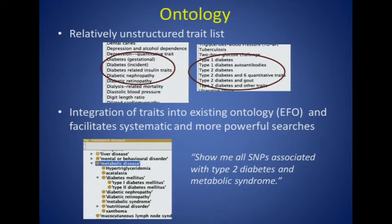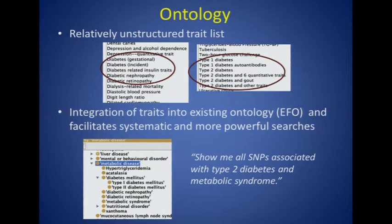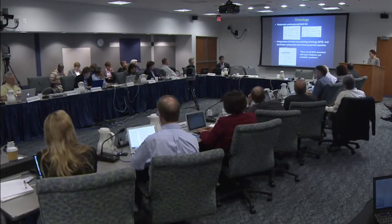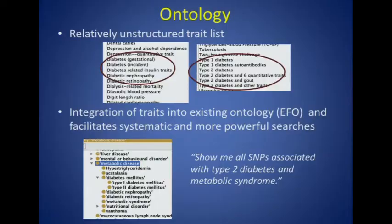Helen Parkinson, who is an expert in developing and adapting ontologies at EBI, noticed that this is a relatively unstructured trait list. For example, a trait such as diabetes is classified both under diabetes as well as the specific type of diabetes, perhaps with other traits in combination. She saw an opportunity to integrate these traits into an existing ontology to facilitate categorization and enable more systematic and more powerful searches. The ontology we are using is called the Experimental Factor Ontology, or EFO for short, which uses multiple resources to produce a controlled vocabulary of experimental variables such as those related to an anatomical feature or a particular disease. The ontology also allows relationships to be specified among the various terms, generating a hierarchy that can be used to expand a query such as searching on all immune system disorders.